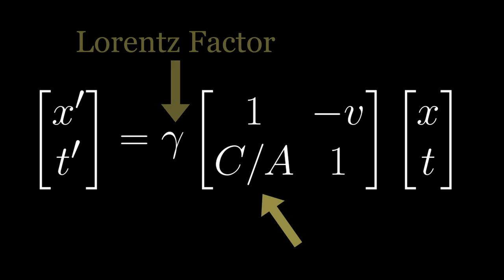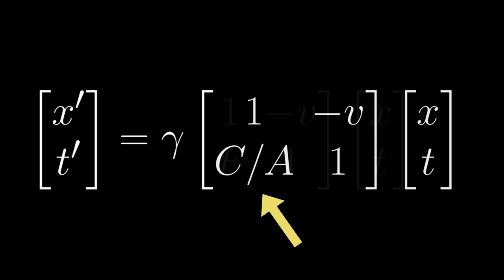And since this is just some constant number divided by yet another constant number, it is likewise nothing more than some arbitrary constant number. Thus, for lack of anything better to call it, let us simply replace it with the letter F. Our updated transformation now looks like this.